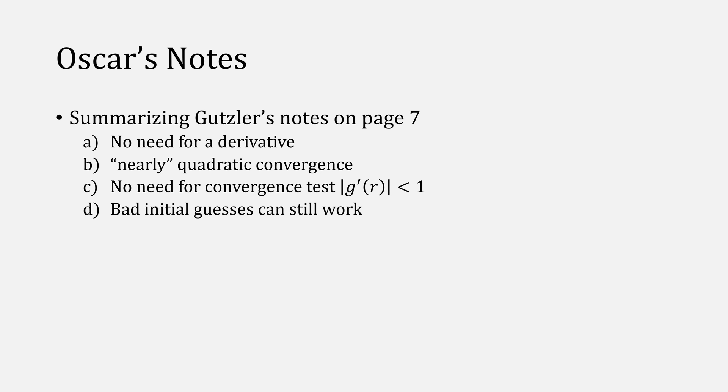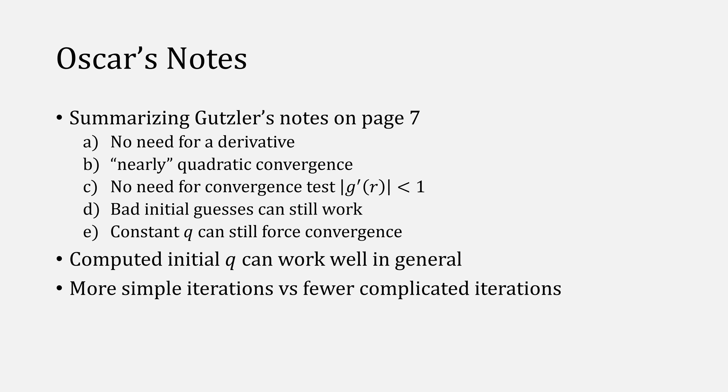The method even works even if you have a bad starting guess. And just using a constant q can still force a convergence when it diverges. I'll also note that using a constant q can work well in most cases. And it's a matter of having more simple iterations versus fewer complex iterations if you're going to use an updating q.